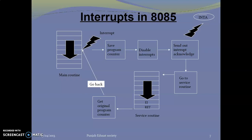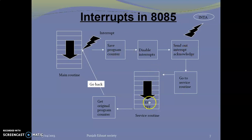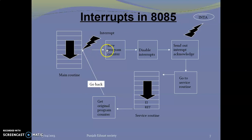This is the normal program and this is the interrupt program. We will execute the ISR — the Interrupt Request Service Routine. After that, we will save the program, load it, and execute it. Then we will continue the instruction module.